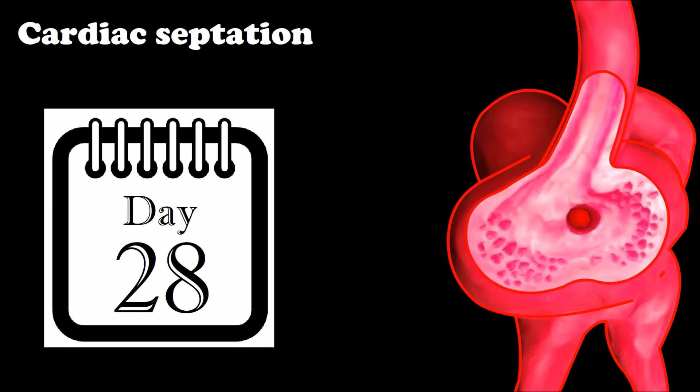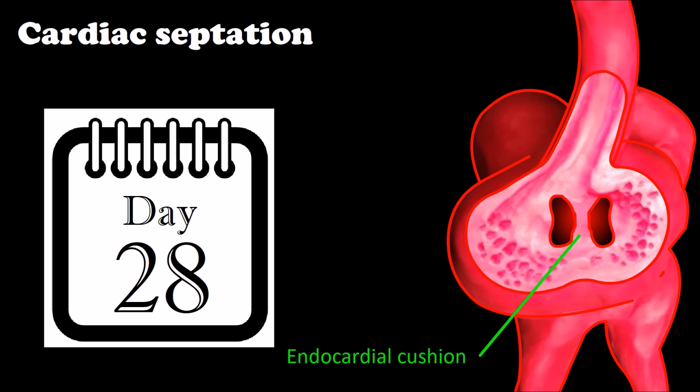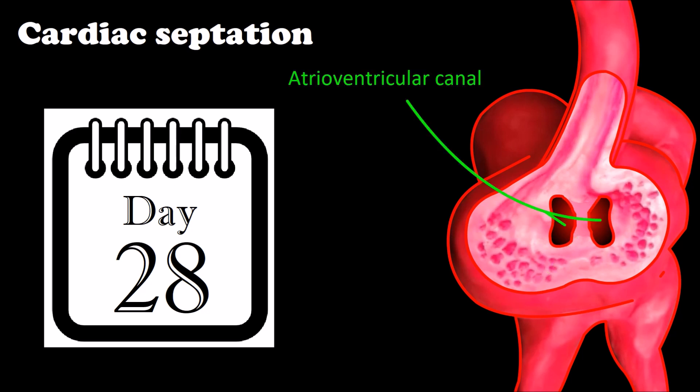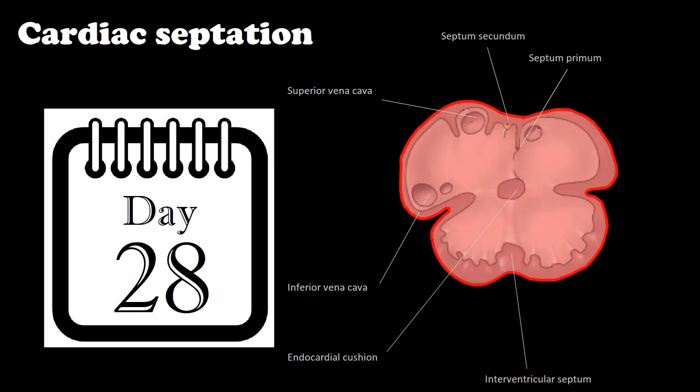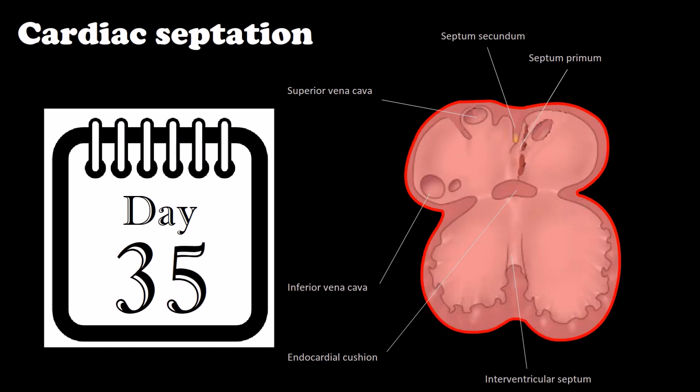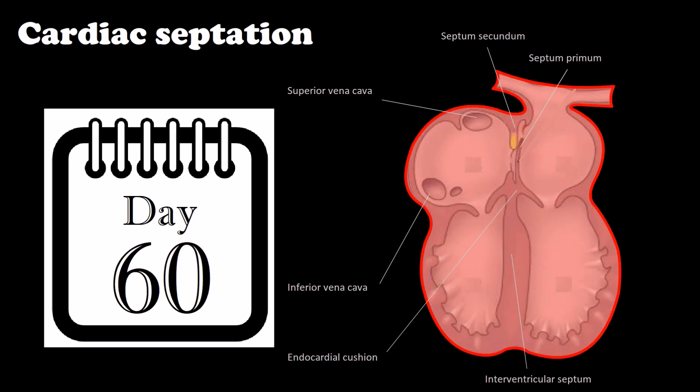Cardiac septation begins on day 28, when the formation of the endocardial cushions in the atrioventricular canal occurs. Later, the formation of the interatrial septum and the interventricular septum, and the differentiation of the conus cordis and the cardiac valves, will begin.